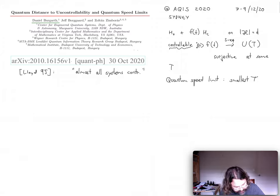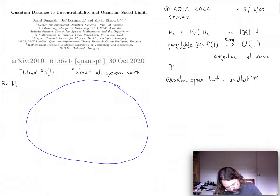And what this means is that if you fix HC and you look at the space of all possible H0s that you choose from, then if you pick one randomly, the system will be controllable. So almost everything in here will be controllable.